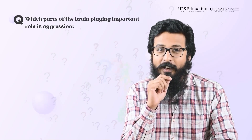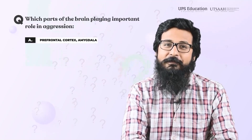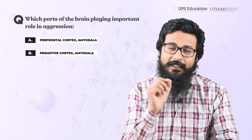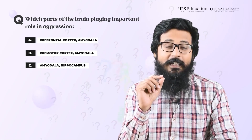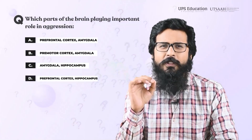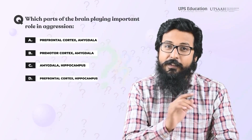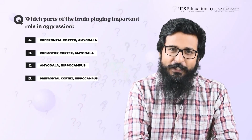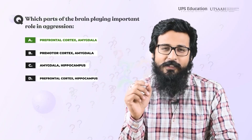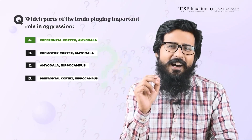Now it's time to answer a question. This question has been taken from an entrance exam and is based on this video only. The question is: which part of the brain plays an important role in aggression? Your options are: A) prefrontal cortex and amygdala, B) premotor cortex and amygdala, C) amygdala and hippocampus, and D) prefrontal cortex and hippocampus. After watching this video, you must know the answer. The correct answer is A — prefrontal cortex and amygdala. The explanation has already been given in the video.